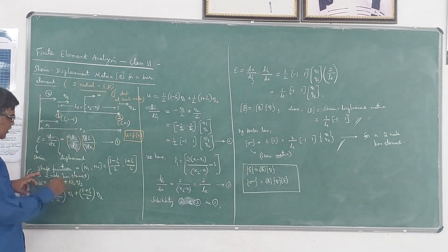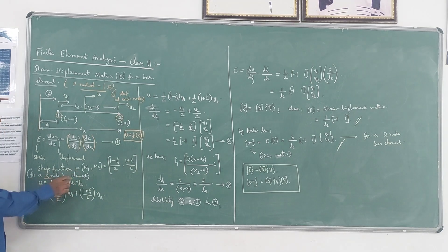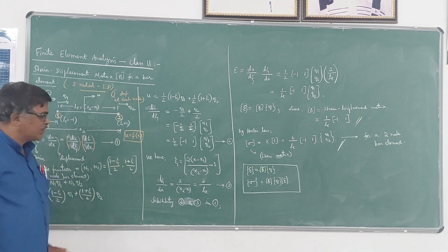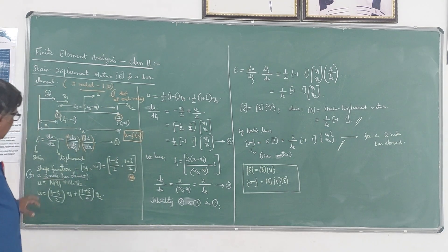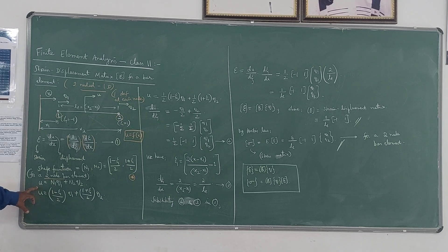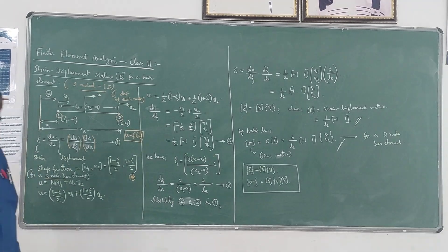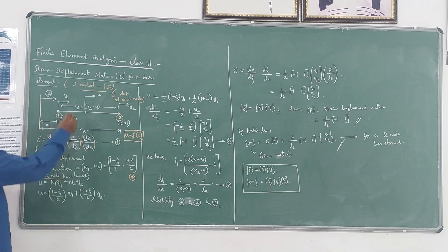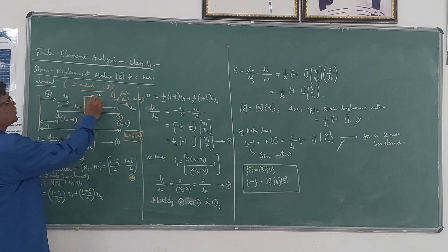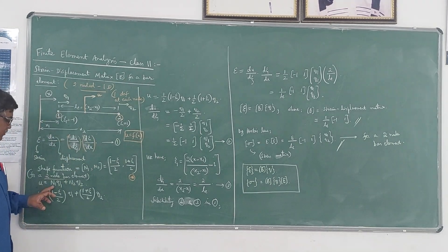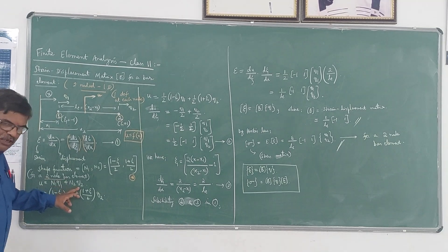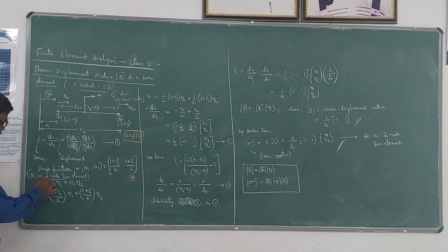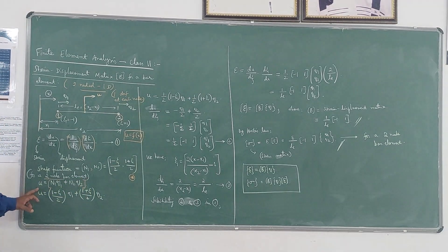The shape functions for a two-node bar element are N1 = (1 − ζ)/2 and N2 = (1 + ζ)/2. The displacement model for a two-node bar element is given by u = N1·Q1 + N2·Q2, where u is the displacement at any point in the element. By knowing the shape functions and the nodal displacements, you can compute the displacement at any required point along the element.